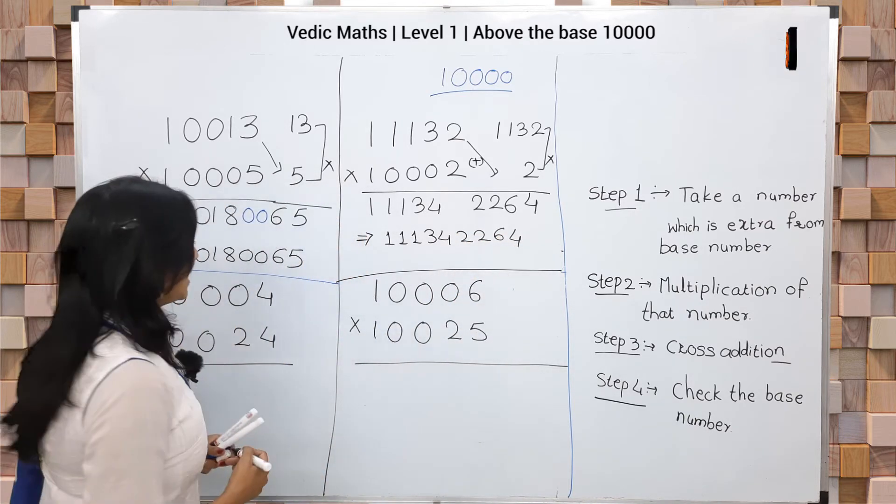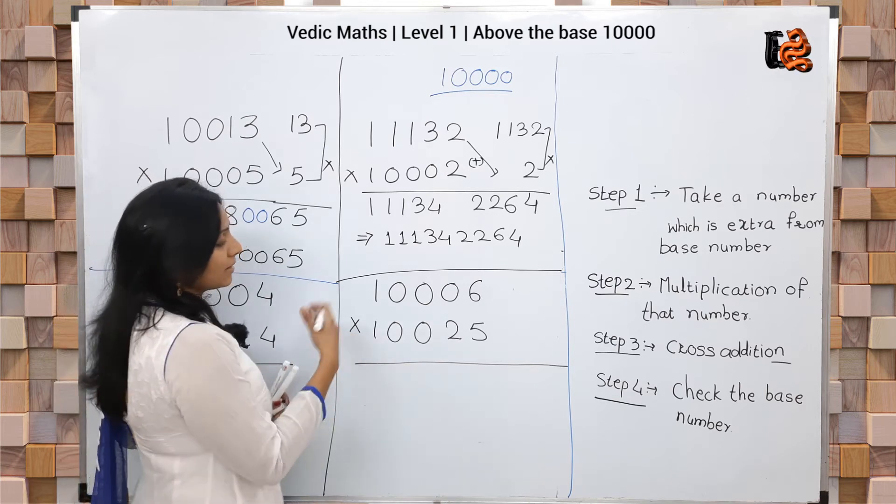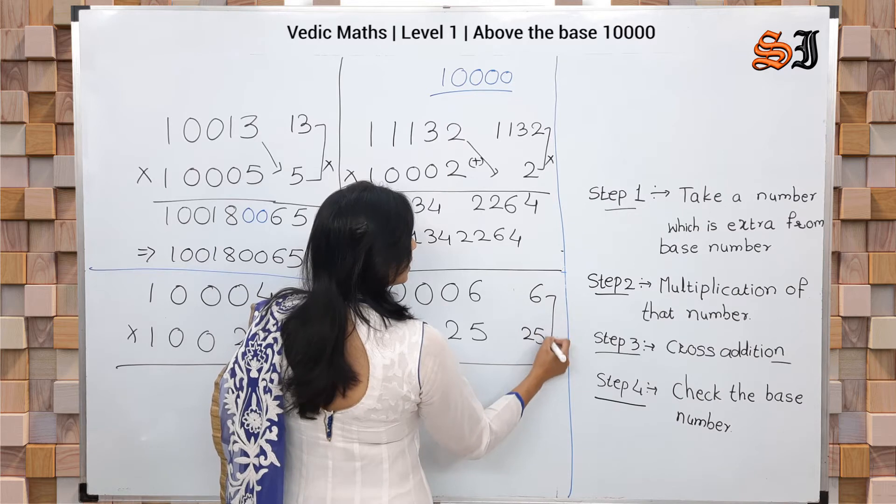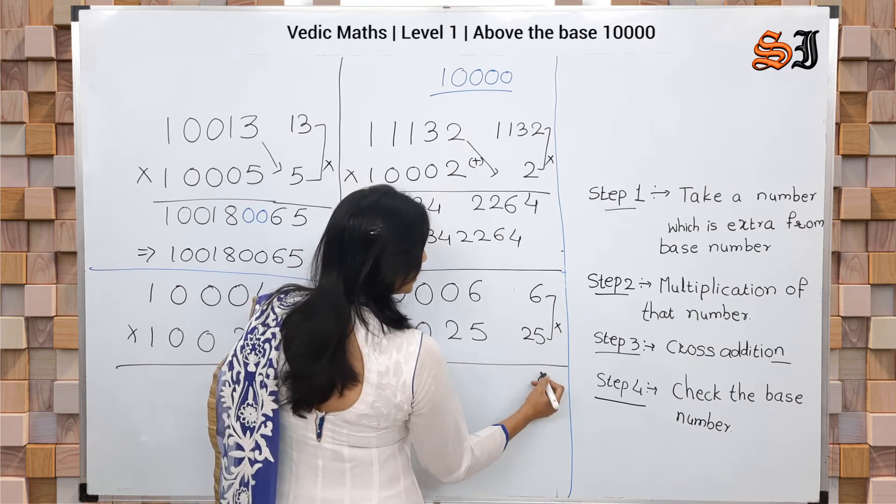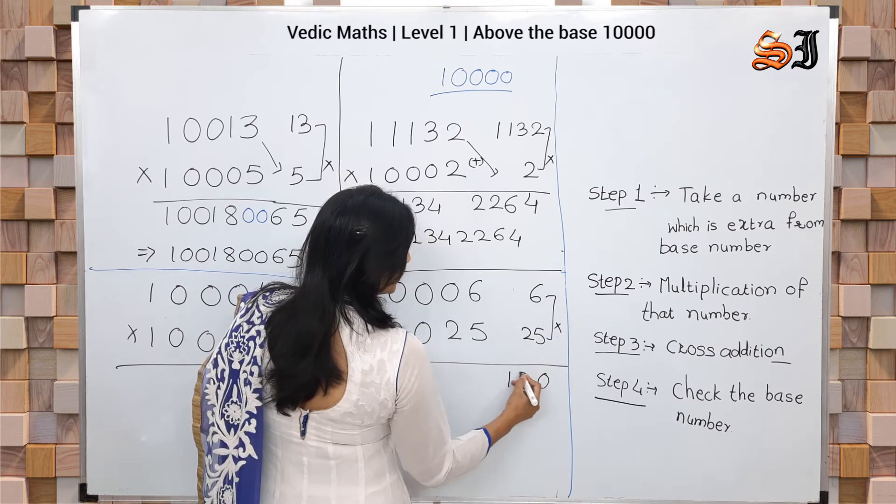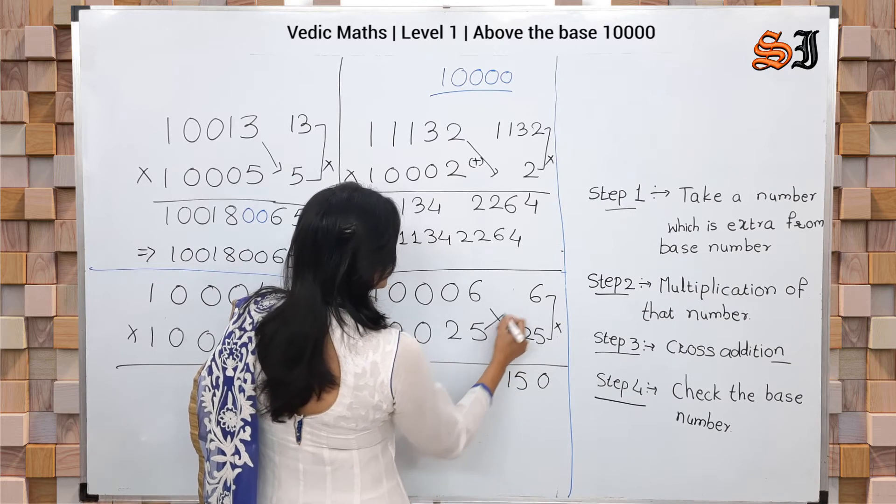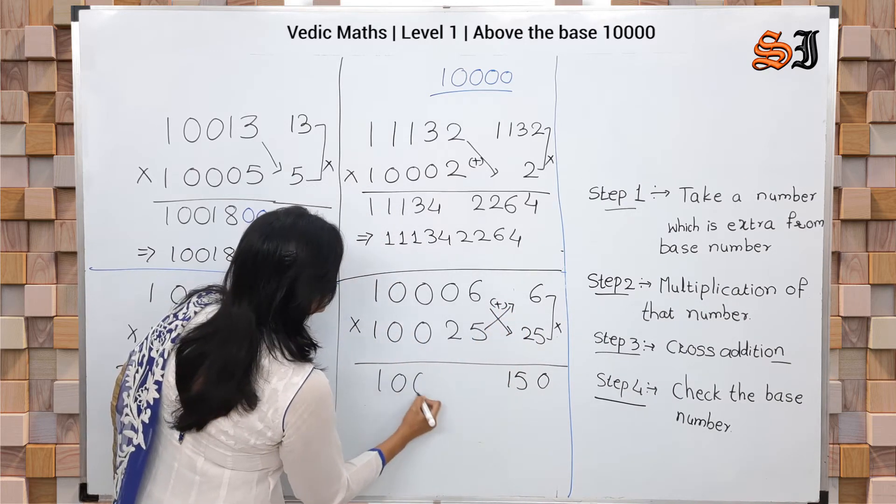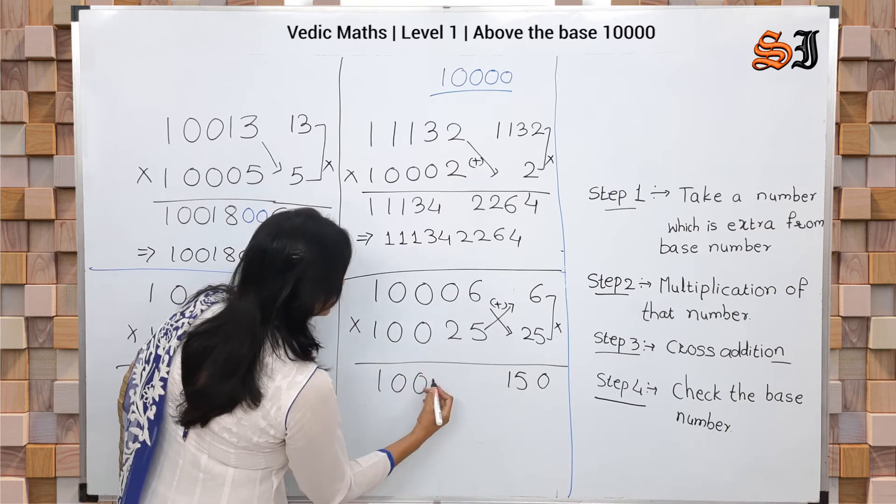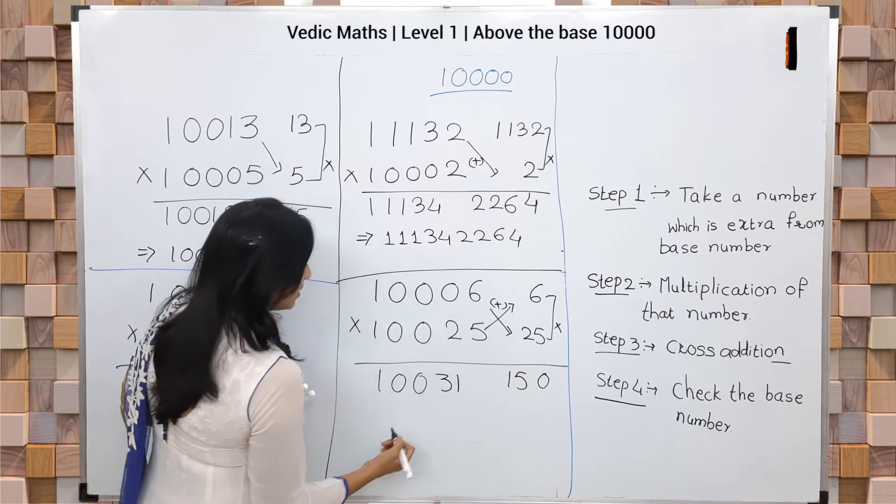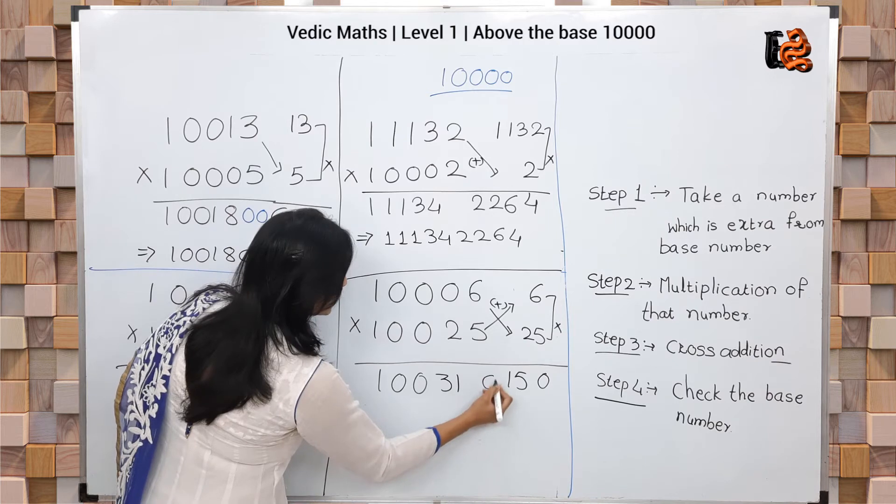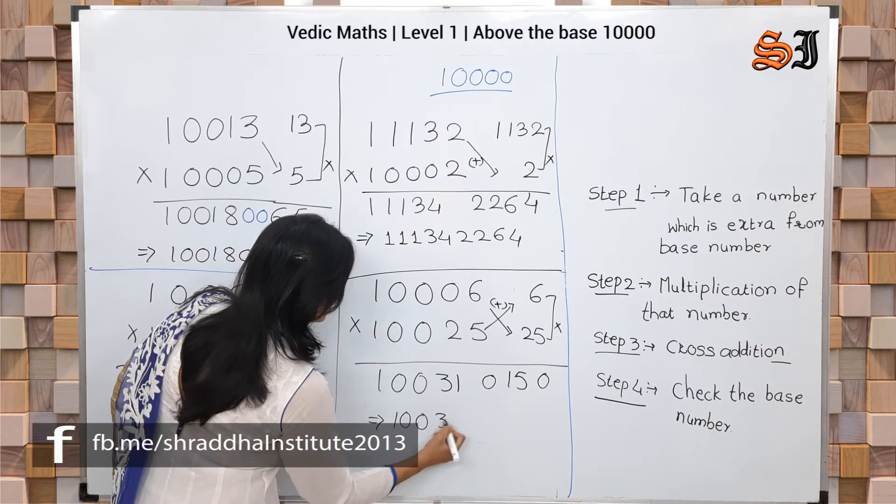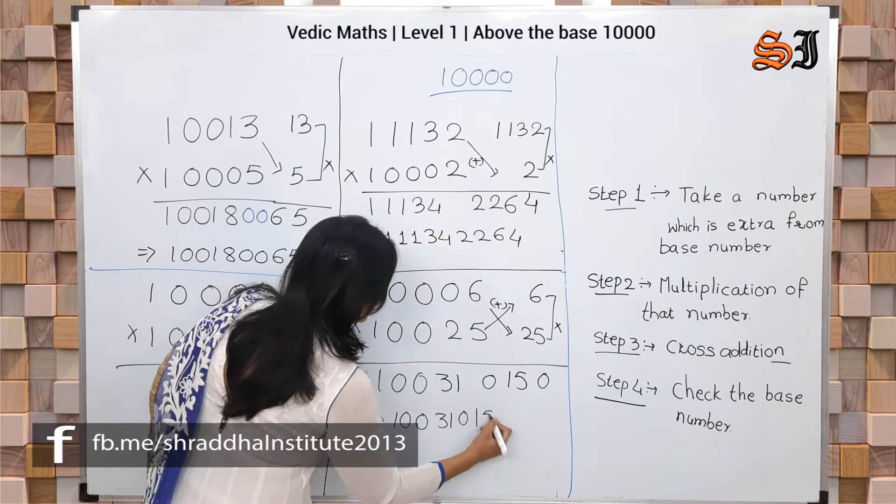Next one: 10006 times 10025. So 6 times 25 equals 150. Cross addition: answer is 100, then 25 plus 6 equals 31. Right side has 10. Answer is 100310150.